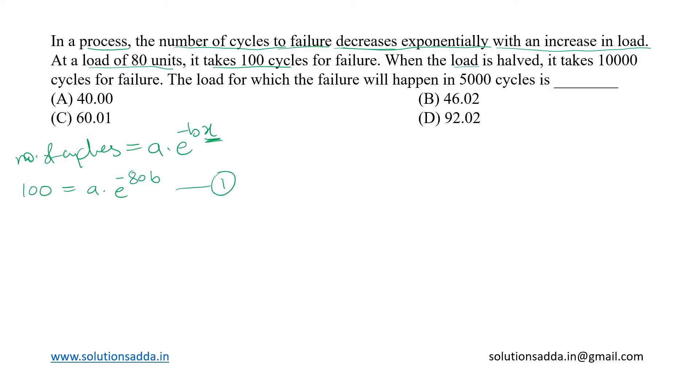Next, when the load is halved, which means this x value is reduced to 40, then it takes 10,000 cycles. So we can say 10,000 equal to a times e raised to minus 40b. This is the second equation.